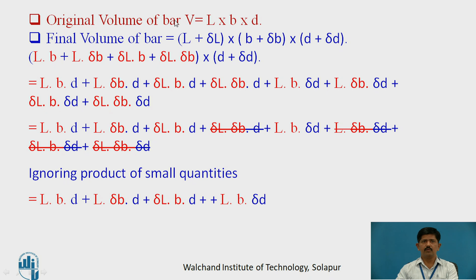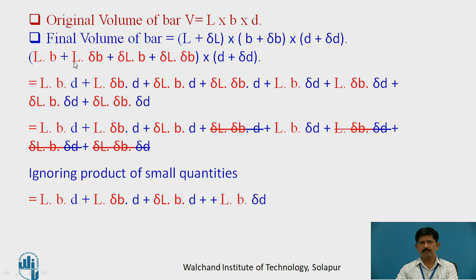The original volume of the bar V is equal to length into breadth into depth. After applying the force, the final volume of the bar — since there is increase in length, breadth, and depth — is (L plus delta L) into (B plus delta B) into (D plus delta D). Multiplying the first two terms, we get L·B plus L·delta B plus delta L·B plus delta L·delta B, then multiplying by the bracket (D plus delta D).